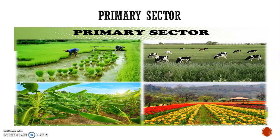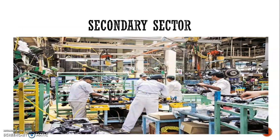First of all is the primary sector, which is the part of a country's economy that grows or extracts raw materials. It includes fishing, agriculture, forestry and mining.